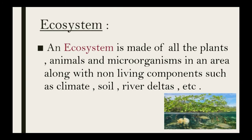Next, an ecosystem is made of all types of plants, animals, and microorganisms in an area, along with non-living components such as climate, soil, river deltas, and so on. Living organisms interacting with non-living components forms an ecosystem.